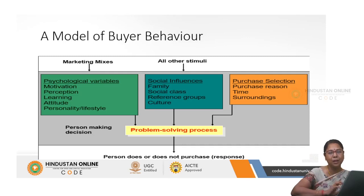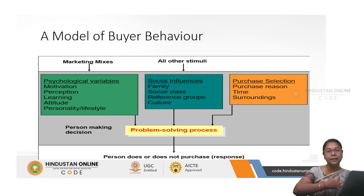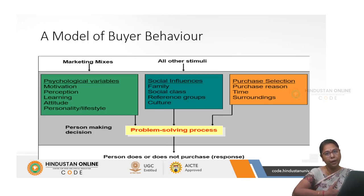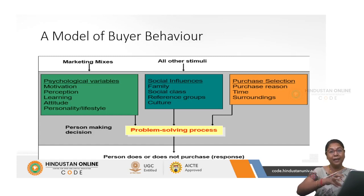These things lead to the problem-solving process of decision making — should I buy brand A, B, or C? Based on the marketing mixes and other stimuli, I have the purchase selection: the purchase reason, timing, and surroundings. Why do I need this particular brand? I need a car to travel, to satisfy my ego, to manage my societal image and lifestyle. If I'm living a rich lifestyle and I buy a Tata Nano, what will society think? These factors together allow a person to decide whether to buy a particular brand or not.